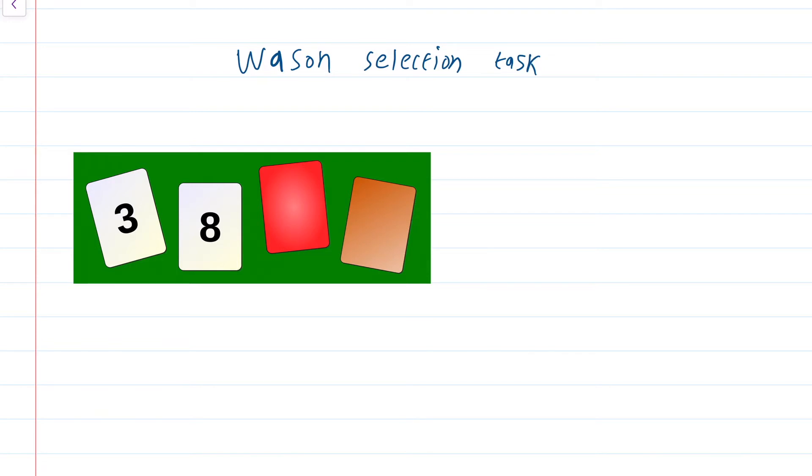So, here we see the cards with faces 3, 8, red and what I think is the colour brown. Behind these cards of course, the first 2 cards there will be some colours, behind the third and fourth card there will be some numbers.